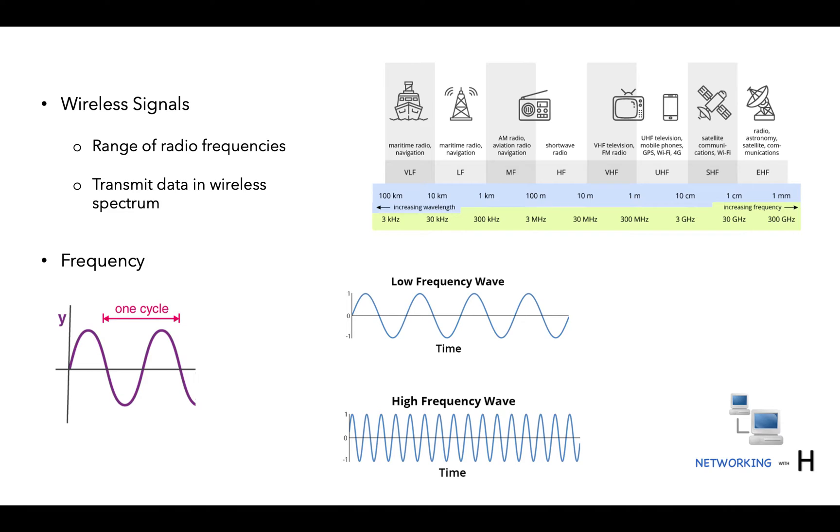Frequency is measured in Hertz. As an example, FM radio signals vibrate around 100 million times every second, so the FM radio operates on the 100 megahertz band.